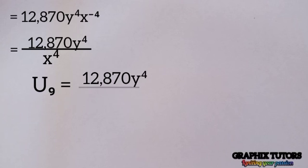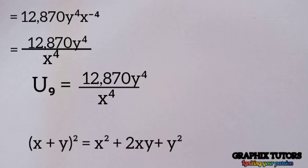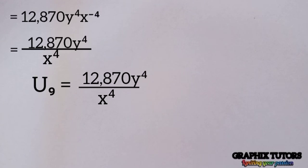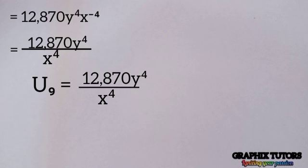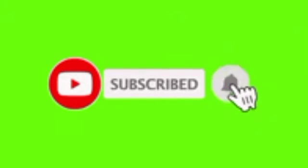So the 9th term — which is the middle term — of the expansion is 12,870 y^4 over x^4. To illustrate what 'term' means: if you expand (x + y)^2, you get x squared plus 2xy plus y squared. Here x squared is the 1st term, 2xy is the 2nd term, and y squared is the 3rd term. Similarly, the 9th term of (y root x / 3 minus 3 / x root y)^16 equals 12,870 y^4 over x^4. If you found this video helpful, please click the subscribe button. Thanks for watching.